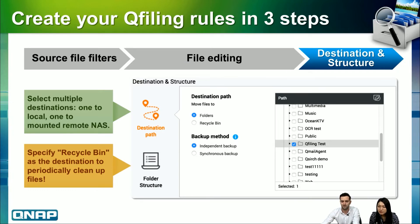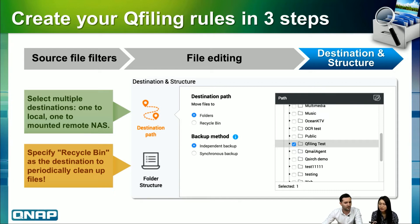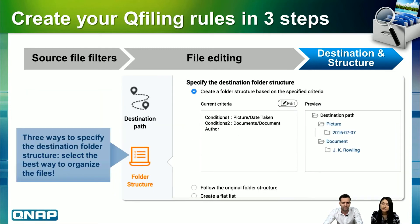The third step is the destination and structure. You can select not just one but two destinations — one local and one mounted remote — so files can be backed up to different paths. From the same source, files can go to different destination folders. You can also set the destination path to the recycle bin, so files move there and are deleted after a specified expiry time — useful for quickly clearing out unwanted files.